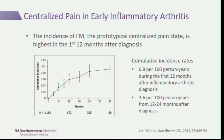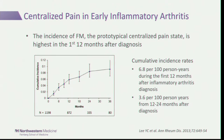We did a study back in 2013 looking at the development of fibromyalgia in early RA patients using the Canadian Early Arthritis Cohort. We found that the incidence of fibromyalgia is highest in the first 12 months after diagnosis of early inflammatory arthritis—there seems to be a window where patients are particularly susceptible to developing a centralized pain state, predicted by high pain levels and poor sleep.